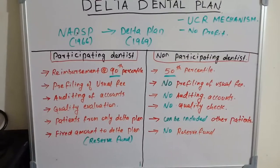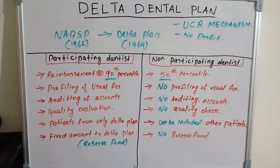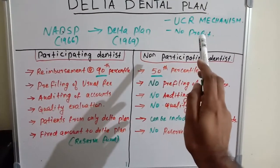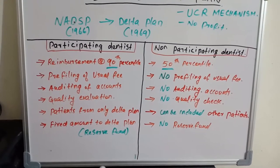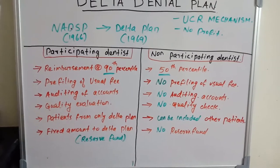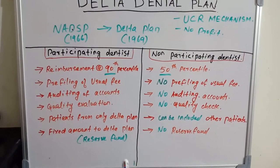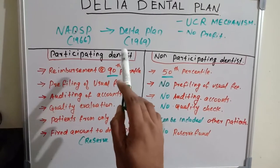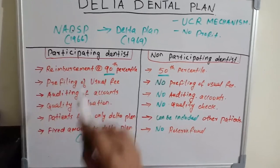In the Delta Dental plan, there are two types of dentists. Dentists can register as a participating dentist or a non-participating dentist. The criteria are different and the reimbursement mechanism is different. Let's see what are the basic differences between the participating dentist and non-participating dentist — the first and foremost difference is the reimbursement amount.